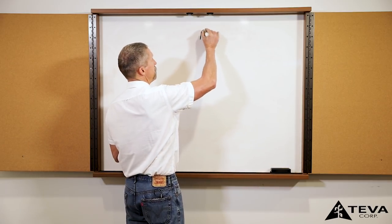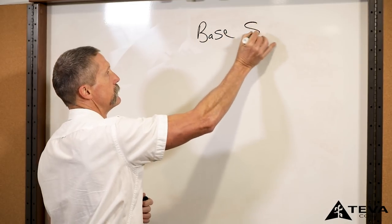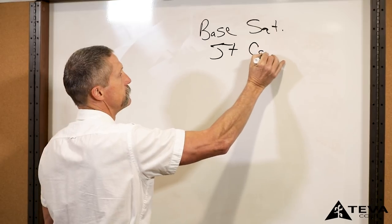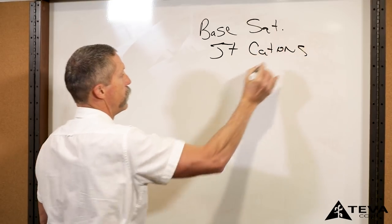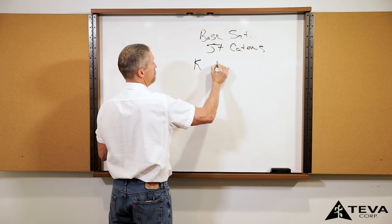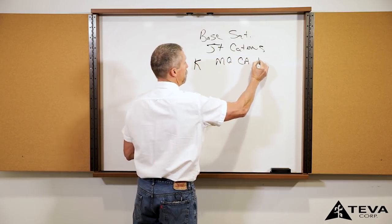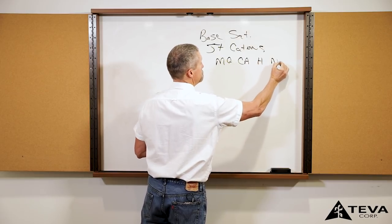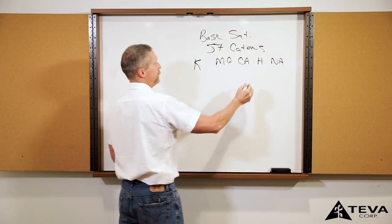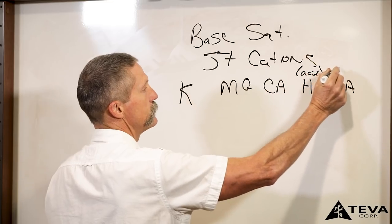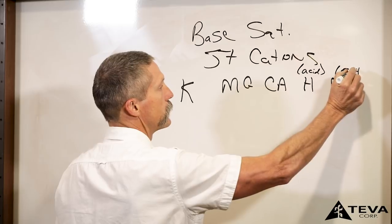In that base saturation, these five positive cations are potash, magnesium, calcium, hydrogen, and sodium. In this, this is your acid in the soil and this is a salt in the soil.